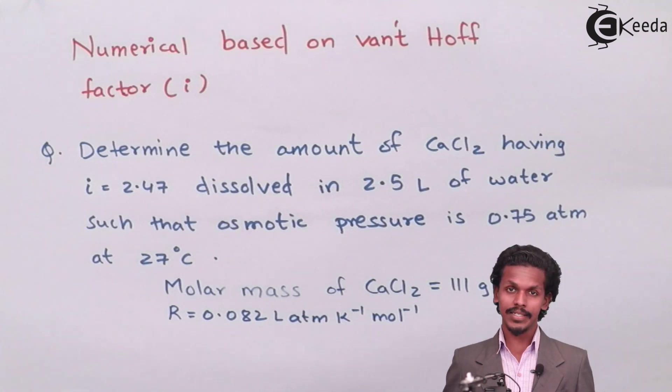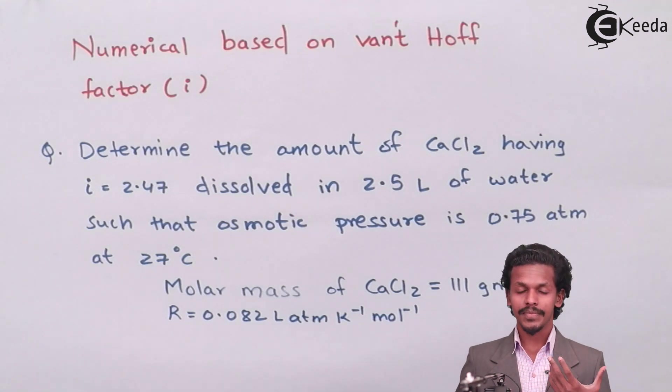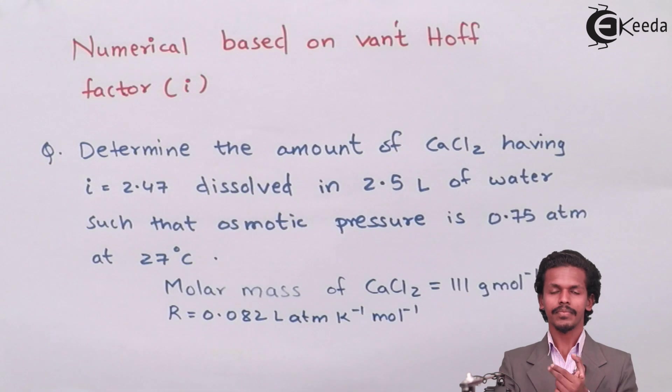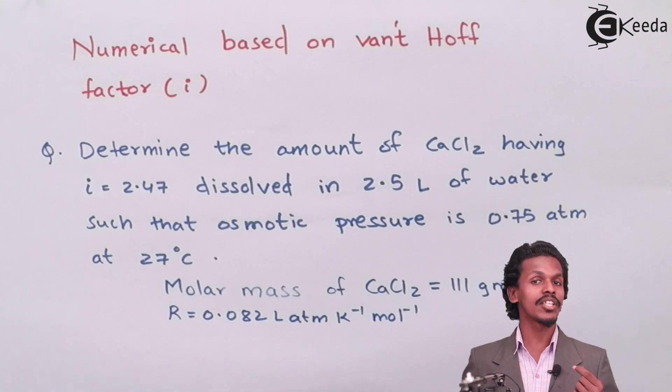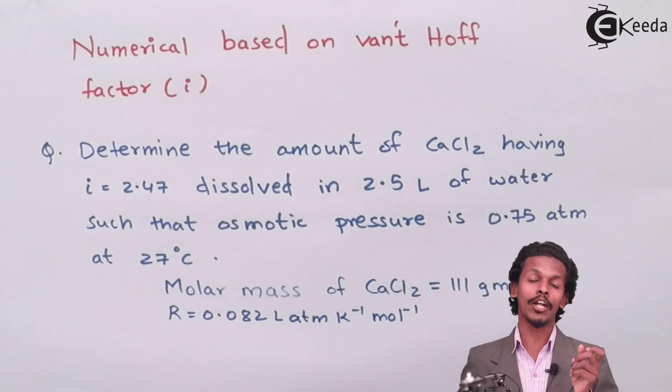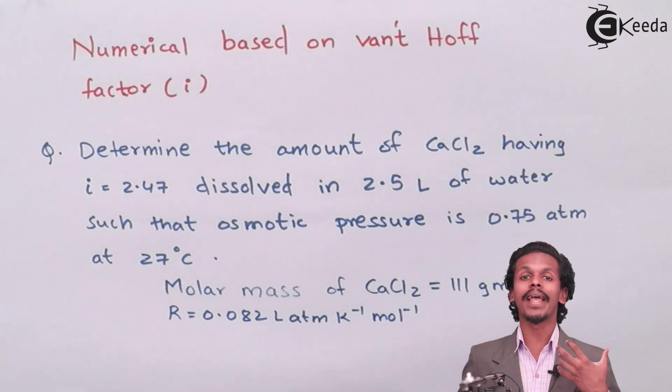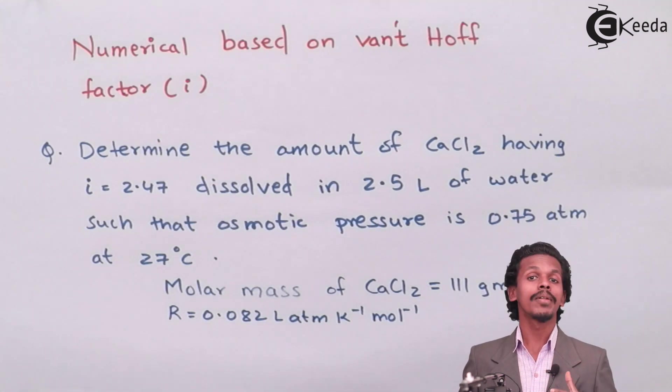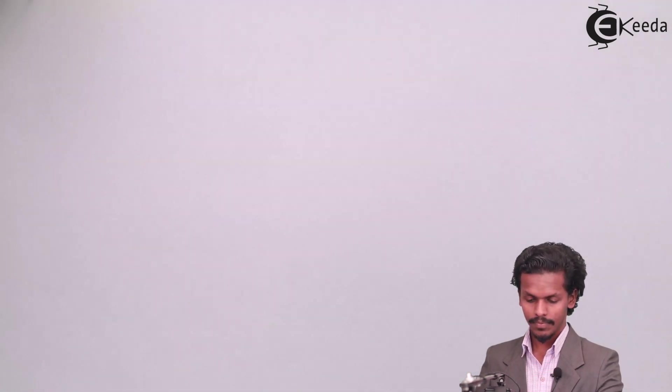So the main requirement of this question is amount of solute present in the solution which also has a Van't Hoff factor. The amount of solute can be calculated as the number of moles or we can calculate by the weight or by the mass of the CaCl2 present in the solution. So let us first of all find out what are the given data's.